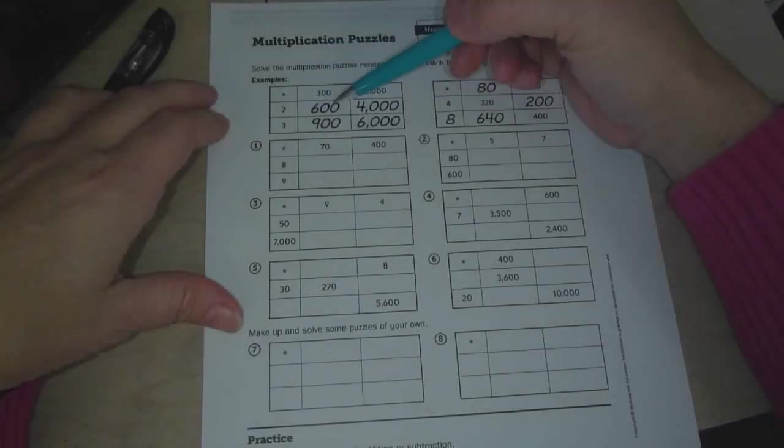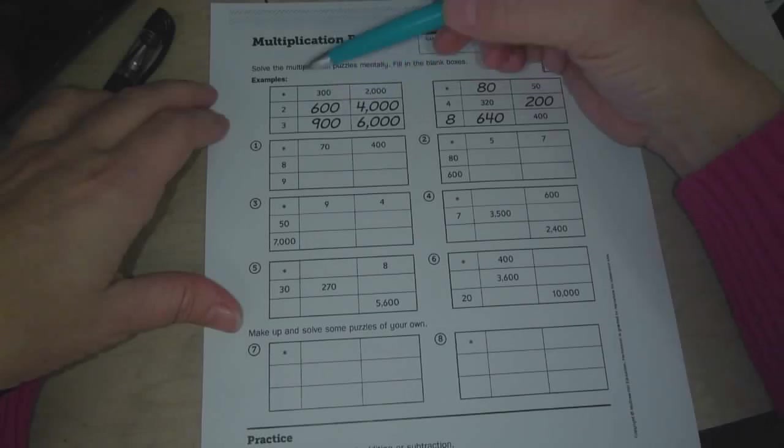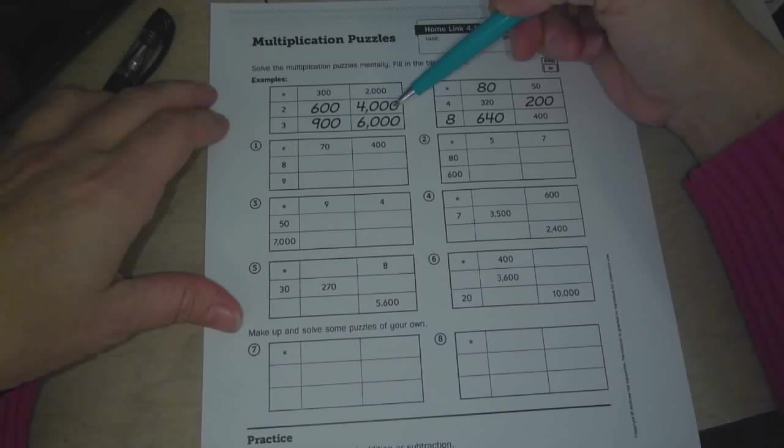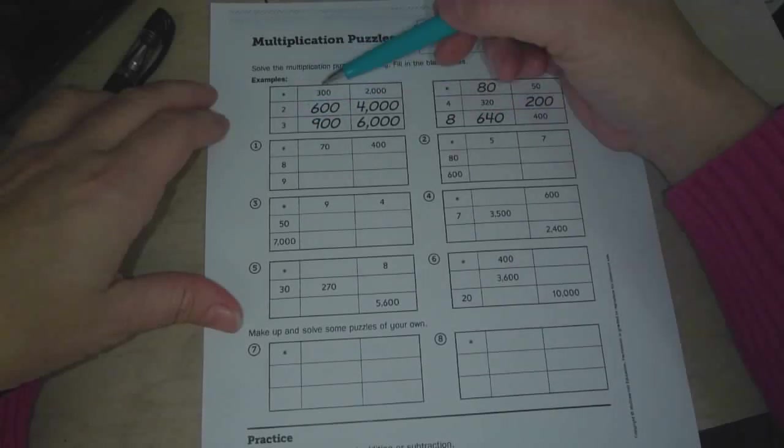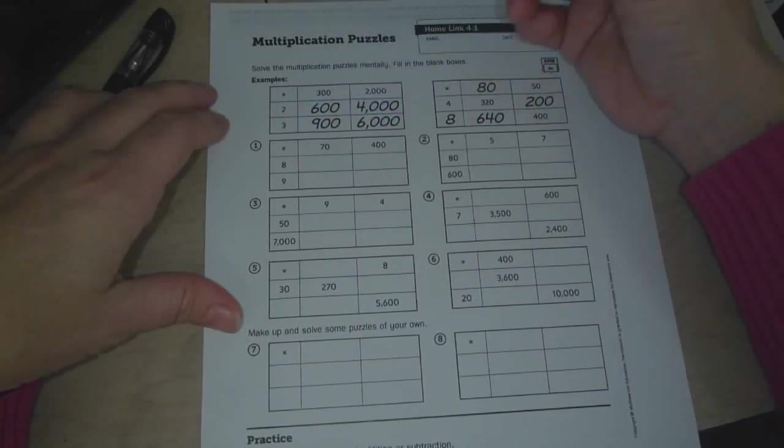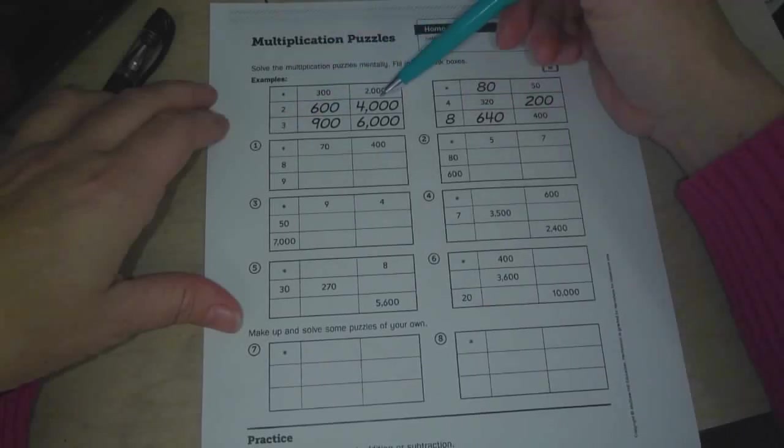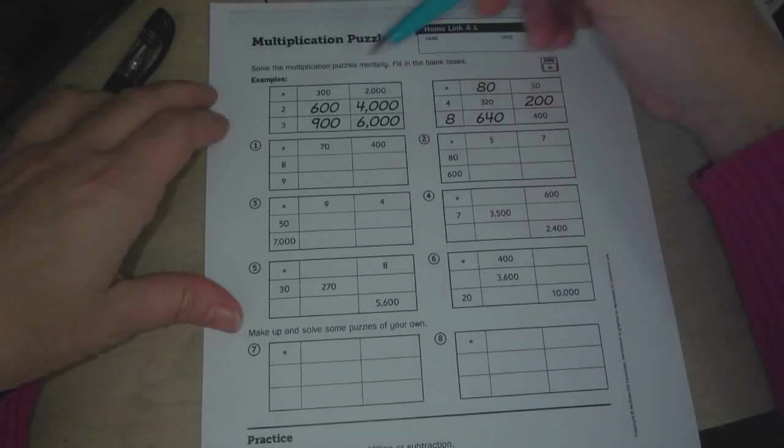So as you can see in the examples, 2 times 300 is 600, 2 times 2,000 is 4,000, 3 times 300 is 900, and 3 times 2,000 is 6,000. So it works like that.